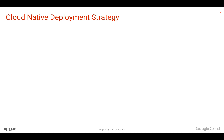Apigee follows a cloud-native deployment strategy. That means whatever software, features, and architecture powers Apigee Edge cloud, the same is available for on-premises too.